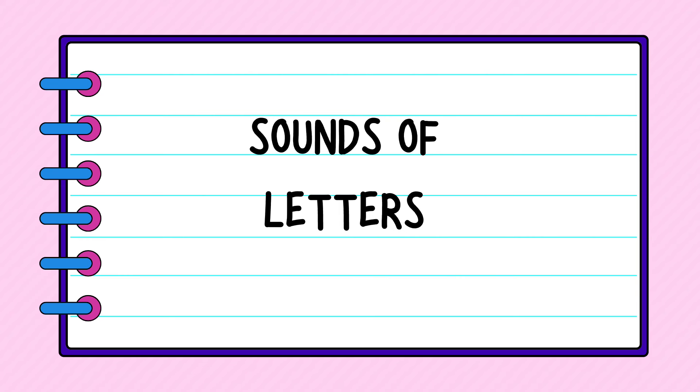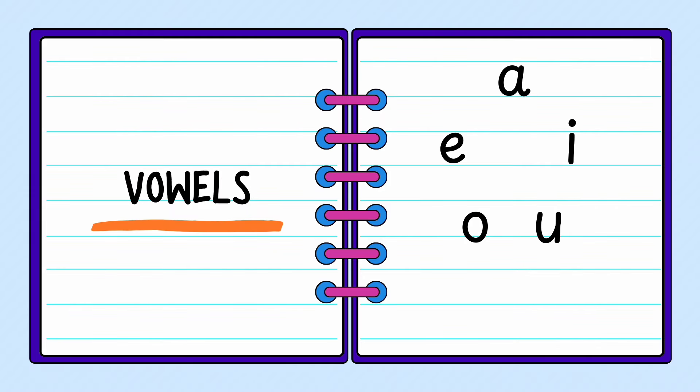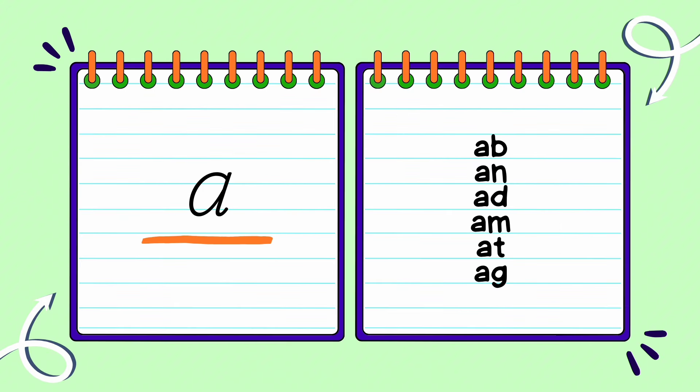As always, go slowly — one letter per week, or even one letter for two weeks. There's no issue; just go slowly and have a lot of patience. Once you're done with the sounds of letters, the next thing is to focus on the vowels: A, E, I, O, U. These vowels can mix and match together and give you a lot of words which your child can easily blend and read.